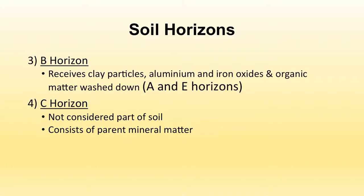The B horizon receives clay particles, aluminium and iron oxides, and organic matter from the E horizon above, which accumulate in this third layer. The C horizon is basically not considered a part of soil because it consists of parent mineral matter.